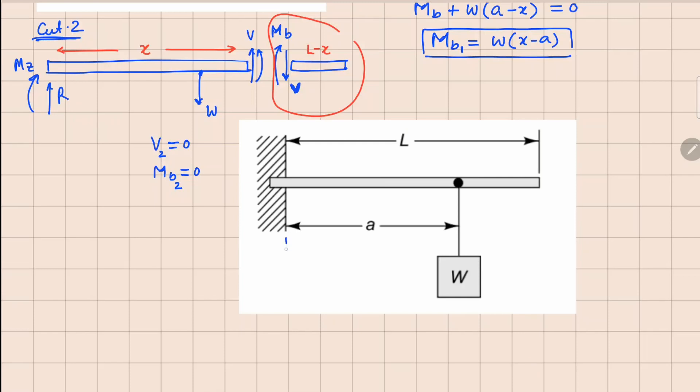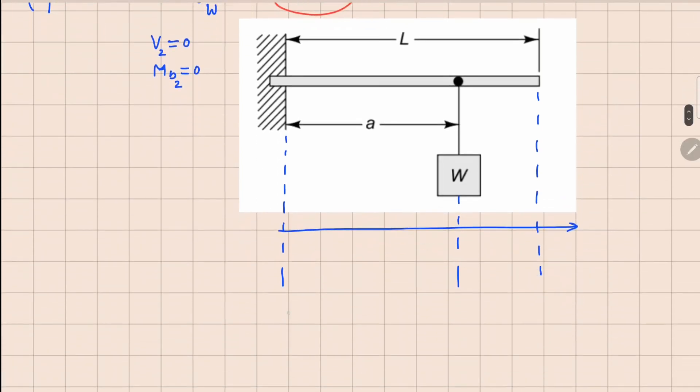So if I extend this beam here in this panel, I can draw my shear force on this line and maybe bending moment on this line right here. Whenever you draw this shear force and bending moment, you always mention your convention. So plus V means this right here and plus MB means this for us.